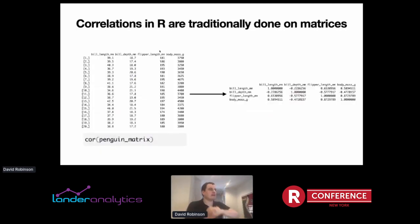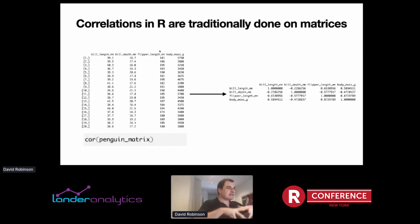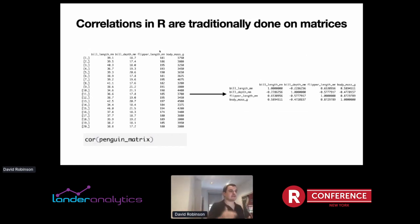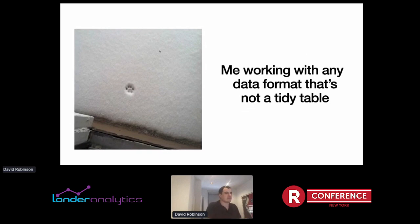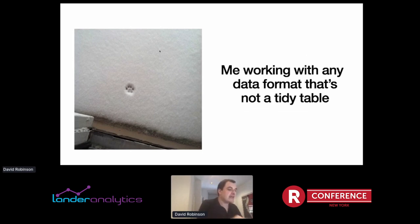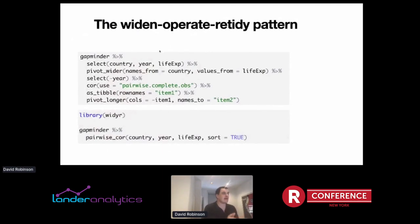Correlations in R are traditionally done in matrices. This is actually the same dataset Thomas Mott was just sharing of penguins and their bill and flipper lengths. Typically, we use a function like cor that takes a matrix and turns it into a different matrix — a matrix of correlations. This is the way I would typically have to do a correlation, and I don't like it because when I work with any data format that's not a table, I'm pretty much immediately like, nope. So I like to wrap all the operations of working with that matrix into a function. Without YDR, the steps for performing the pairwise correlation would look something like this — really a lot more steps, and a very specific pattern.